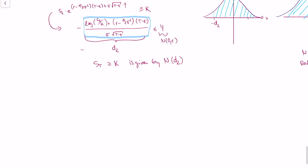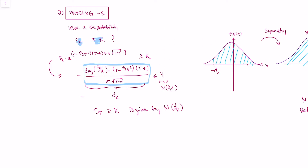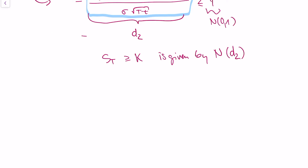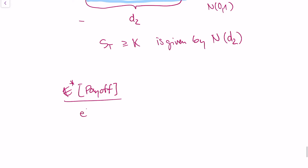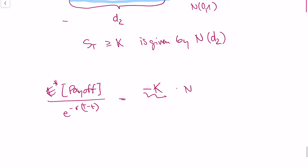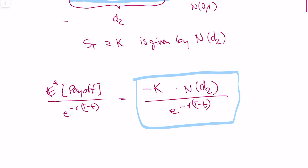What is our claim to minus k worth? The price of any claim is given by the risk-neutral expectation of the payoff divided by the risk-free rate. We now know that our expected payoff is minus k, and the probability that we receive minus k is given by N(d2). We divide by the risk-free rate because we're taking a risk-neutral expectation. So that formula gives us the worth of our claim to minus k.